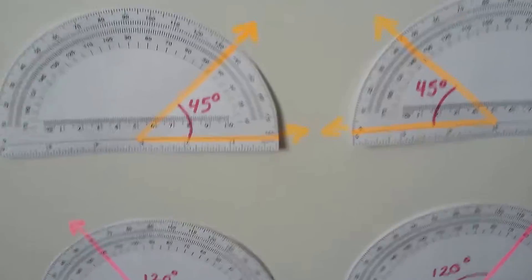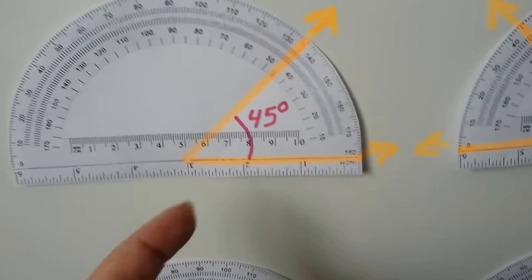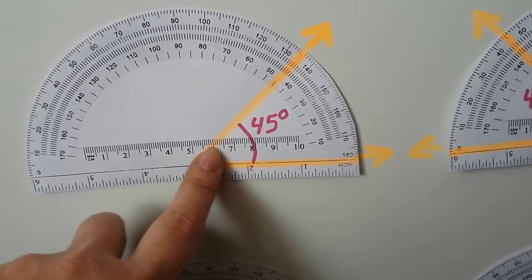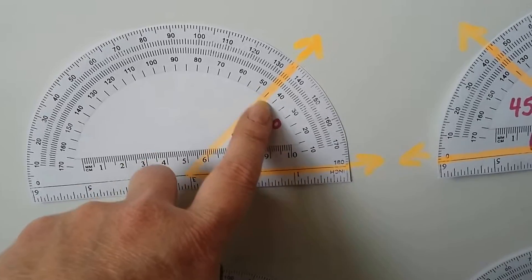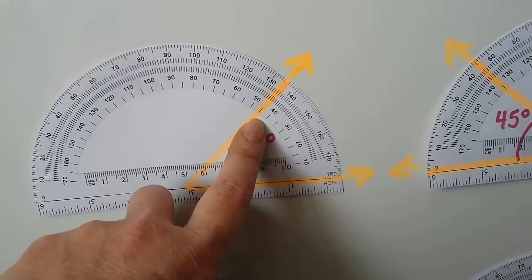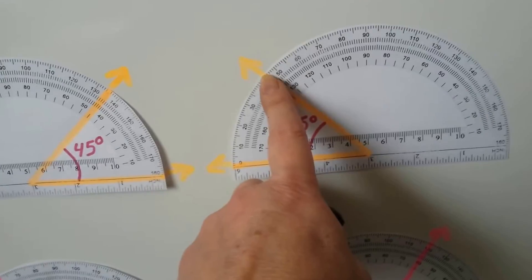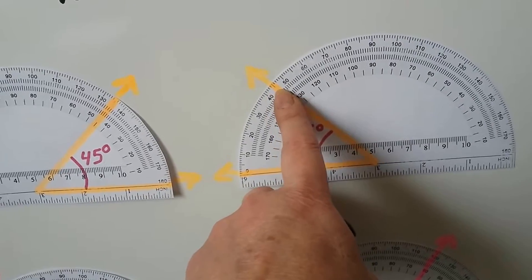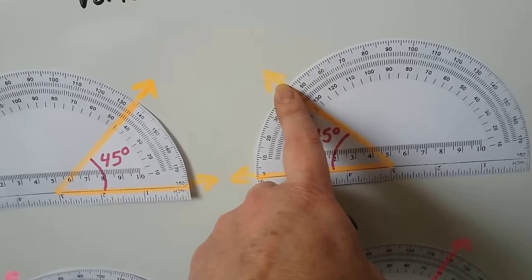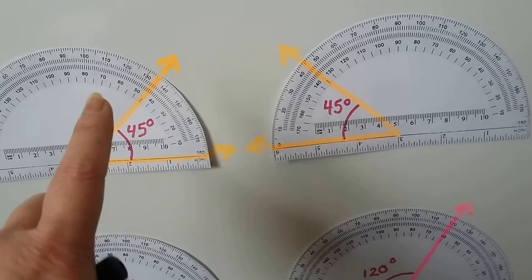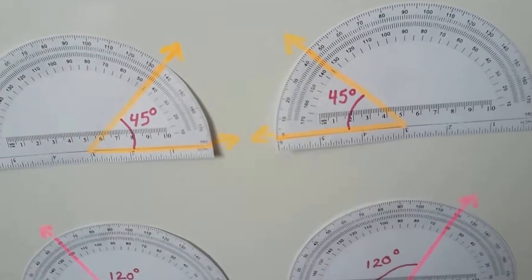So take a look at this. Here we have one opening to the right. And we're using the inside measure to see that this is a 45-degree angle. See? Here's 40. There's 50. So 45 is in the middle. If we flip it around and have it opening to the left, we have to use the outside measures. Here's 40. Here's 45. Here's 50.